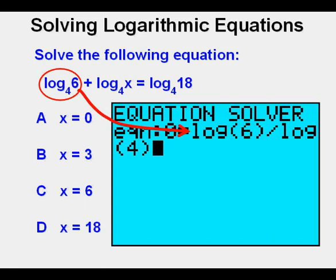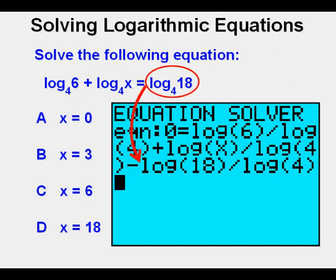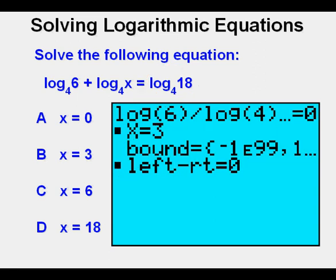Now we enter the first part of the equation using the change of base formula by entering log base 10 of 6 divided by log base 10 of 4, then we enter the next part of the equation also using the change of base formula plus the log base 10 of x divided by log base 10 of 4, and finally we solve the equation for 0 by subtracting the log base 10 of 18 divided by the log base 10 of 4. We subtract because we need to subtract it for that right side of the equation to be equal to 0. Now we solve by pressing alpha enter alpha enter. We get our answer x equals 3 which is answer choice B.